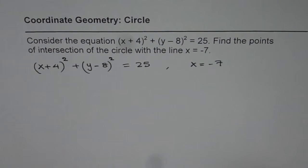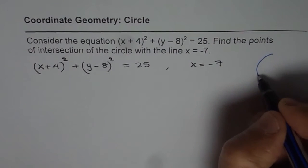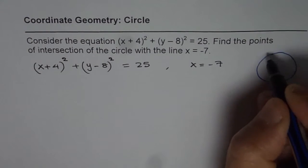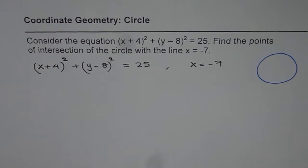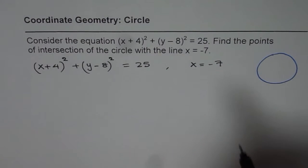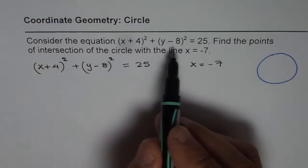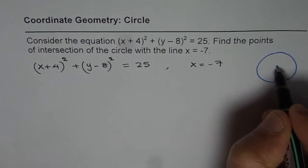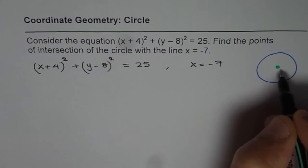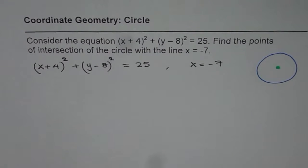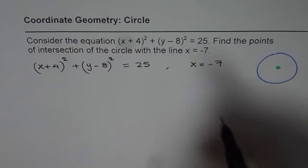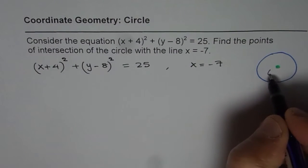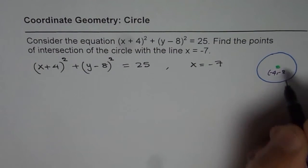The situation is like this: we have a circle whose center is at (-4, -8). I'm not drawing the full coordinate system, but we know the radius is 5.